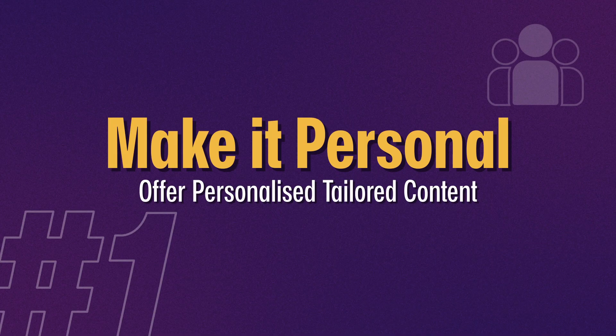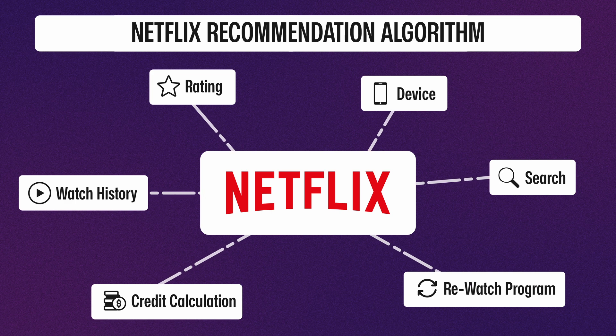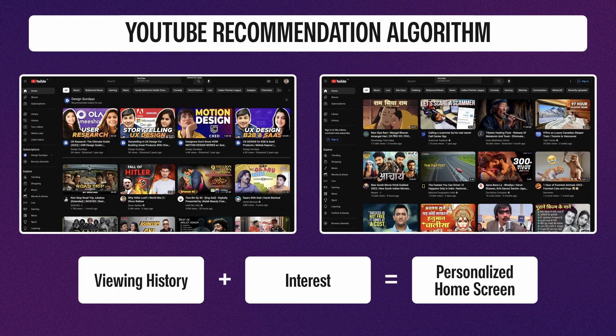Make it personal. Netflix uses a recommendation algorithm to suggest shows and movies based on the user's viewing history, while YouTube creates a personalized home screen for each user based on their viewing history and interests. And that's why you might have seen how YouTube looks completely different for your best friend and you — it's because of your viewing history. So if you have any weird videos in there, you know who to blame.